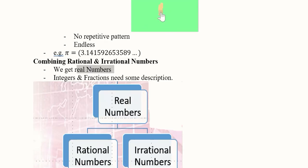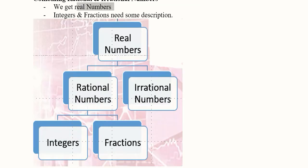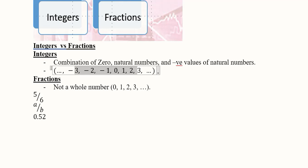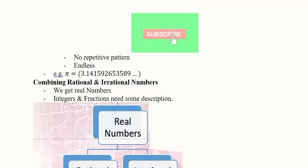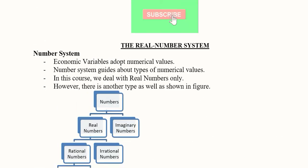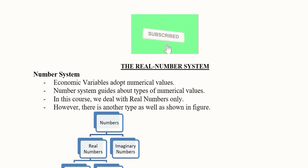Integers and fractions also need description. These are integers: the combination of 0 and the negative and positive values. Fractions are those that are not a whole number. As you can see, 5 over 6, a over b, and 0.52 are fractions. This is how we understand the types of numbers in economics and which ones are more applicable.